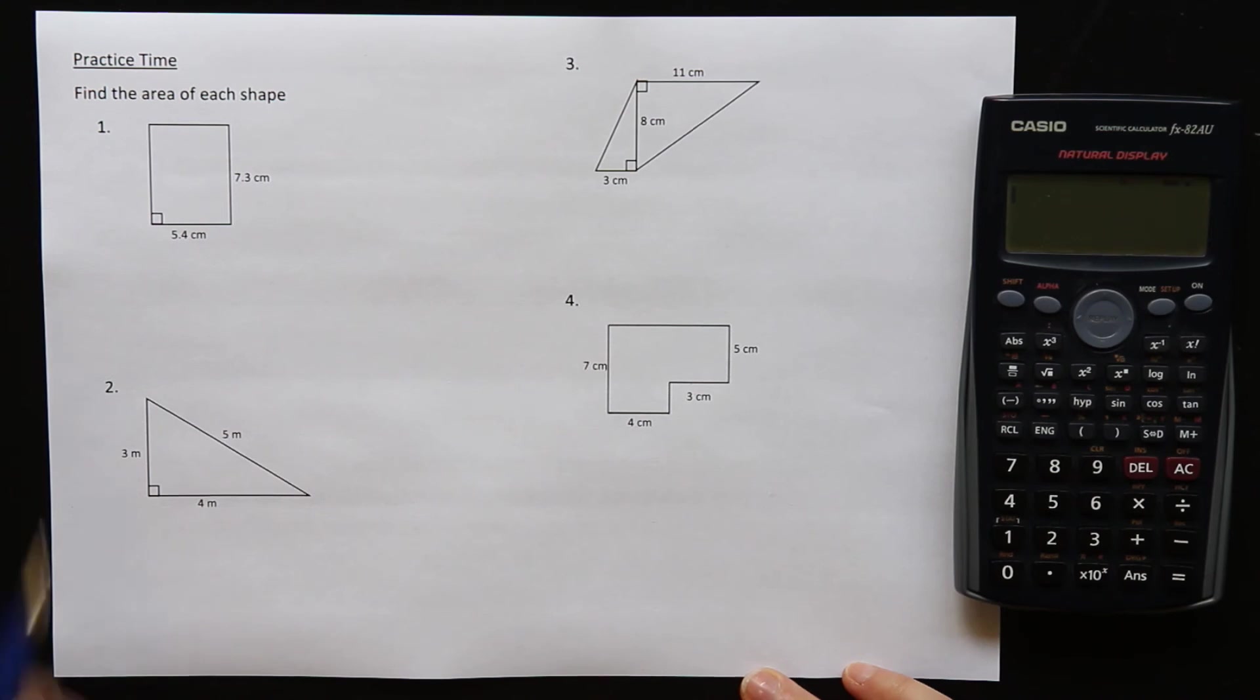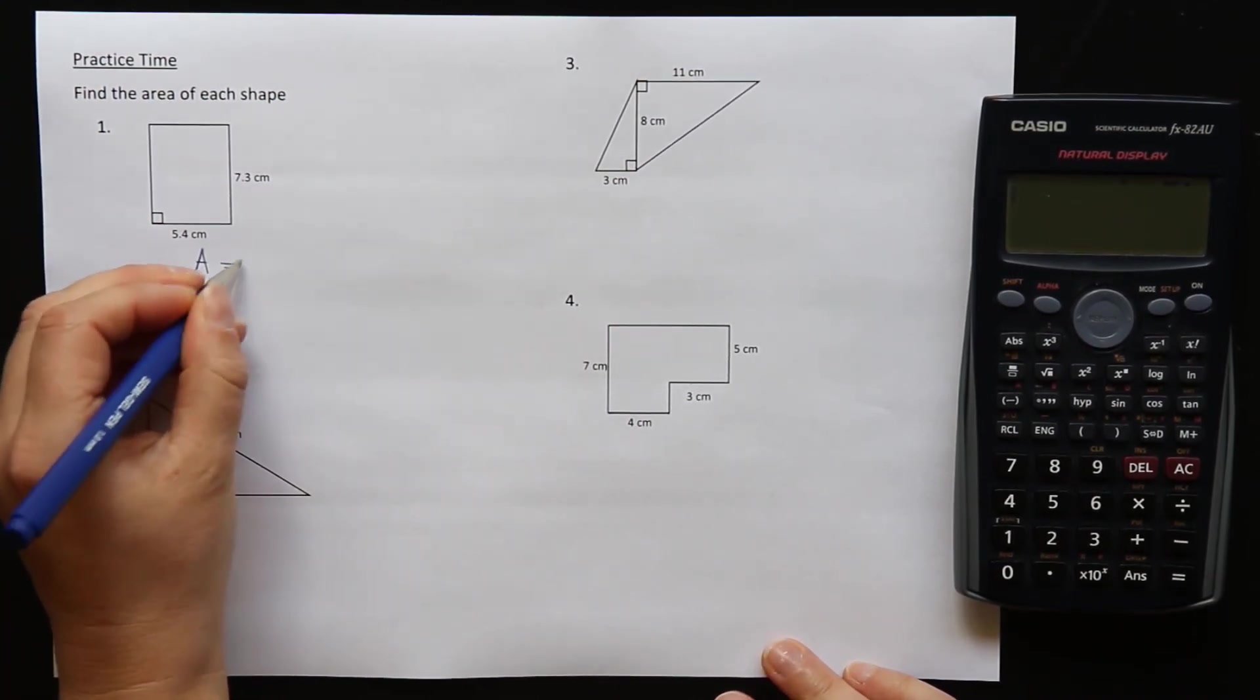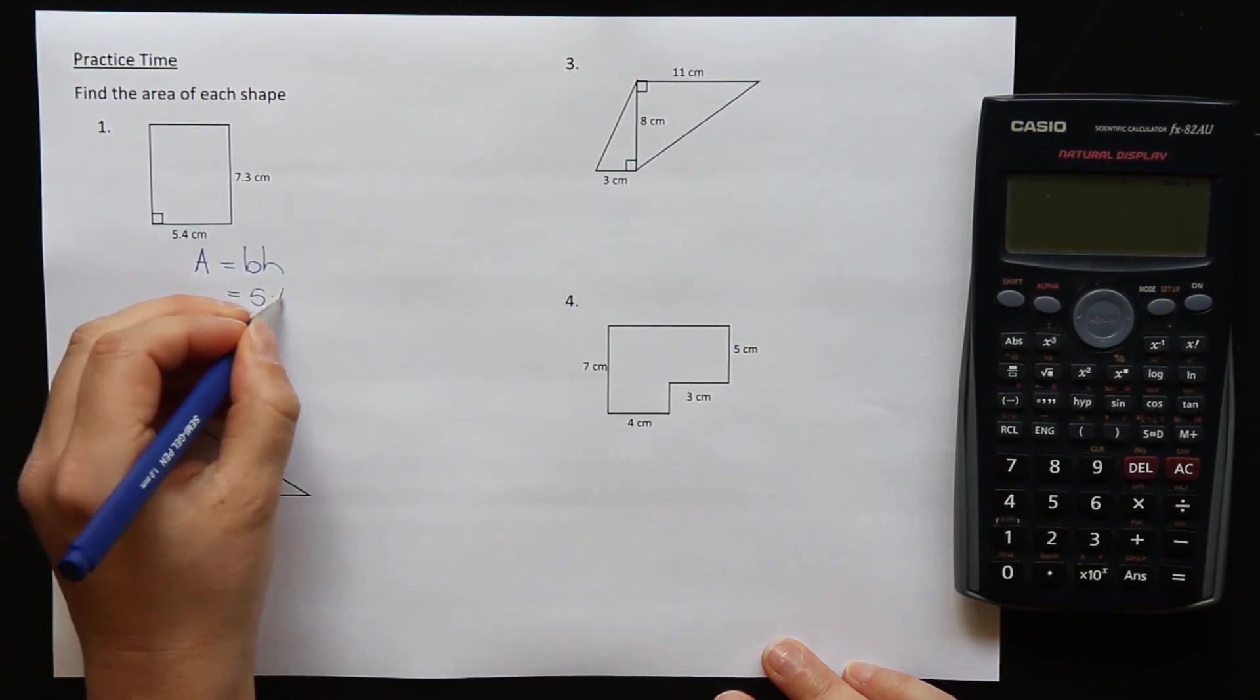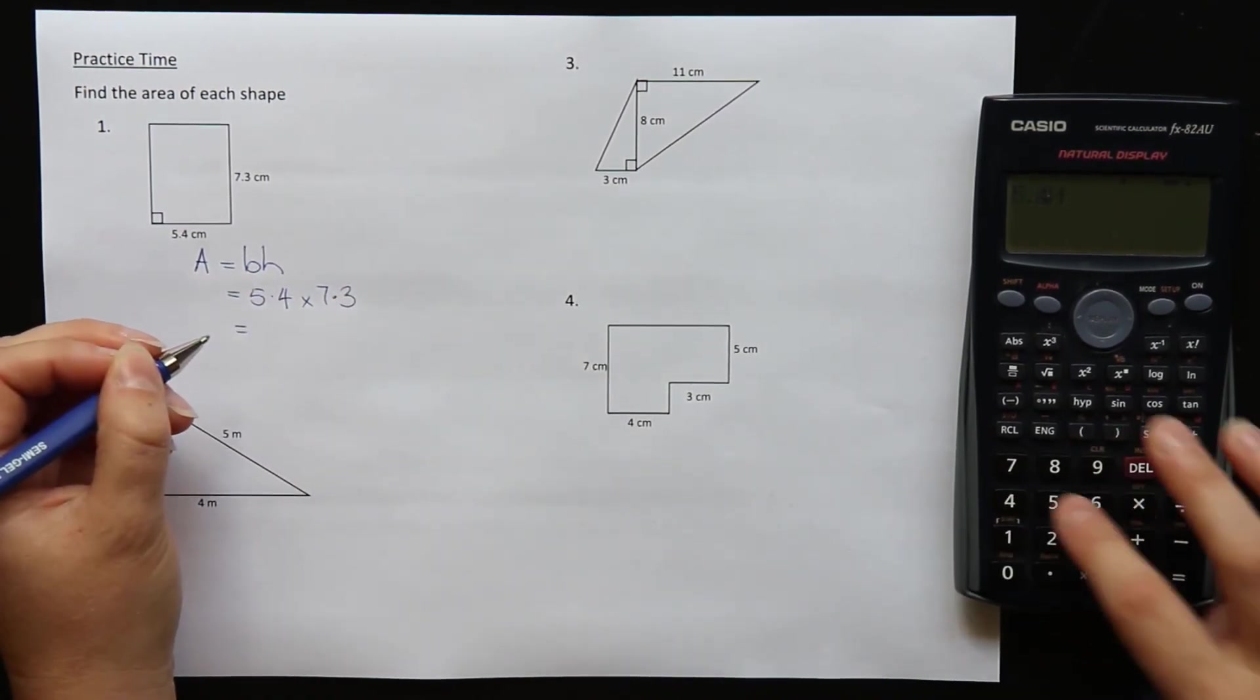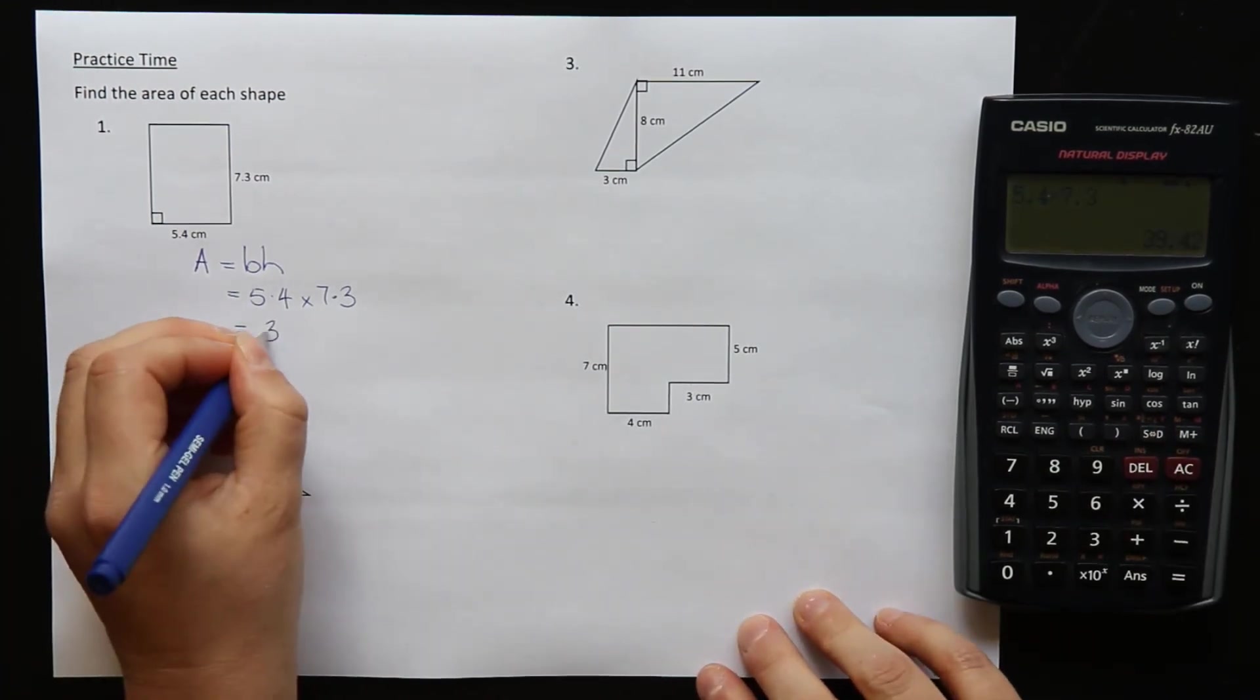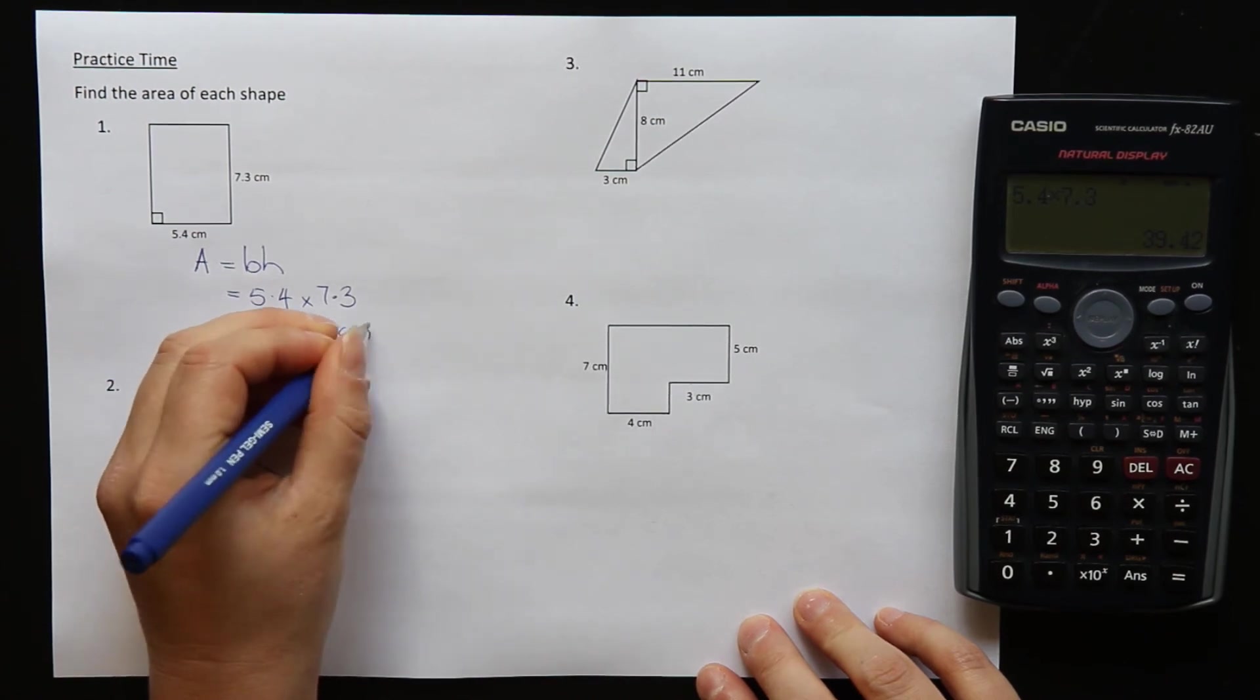So for question one, this is a rectangle. So we use the formula A is equal to BH. The base of the rectangle is 5.4 and the height is 7.3. So we times those together and we get 39.42 centimeters squared.